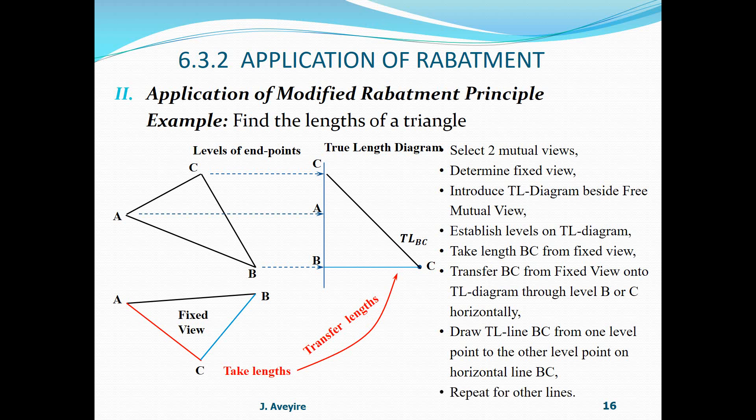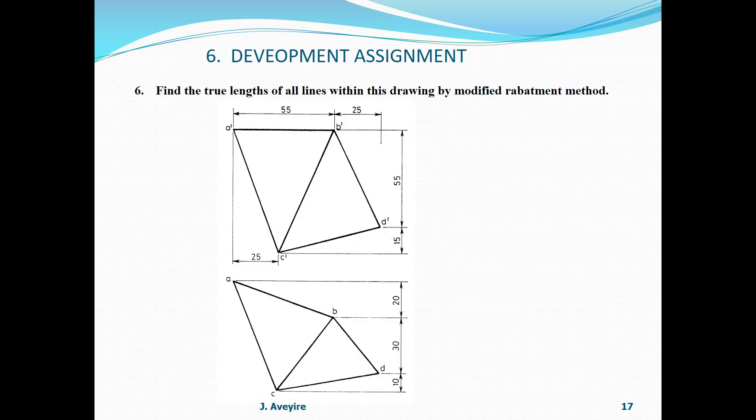Repeat for other lines. So pick another line, that is AC. Put at A level, then we draw the line from C level to A level, and that will give us the true length of AC. Likewise, AB could have been done.